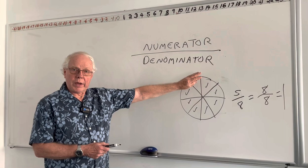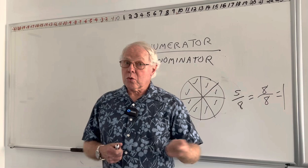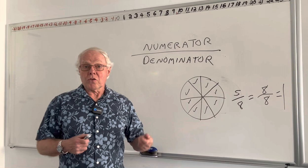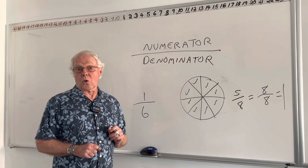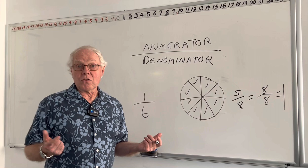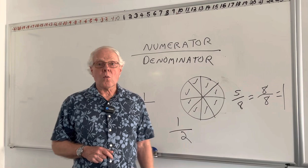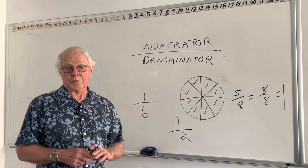A fraction can be part of a whole: 8 slices, you had 3 of them, so that's 3 eighths. A fraction can also be a probability, like when you're rolling dice. A die has 6 sides and your favorite number is 3 — only one of them is a 3, so you have a 1 out of 6 chance of winning. Flipping a coin: a coin has 2 sides. If you call heads, only one side is heads — you have a 1 half chance, a 50-50 chance, or a 50% chance of winning.